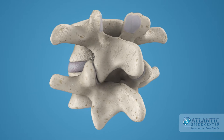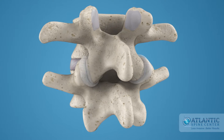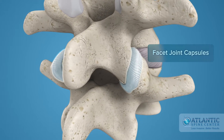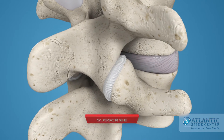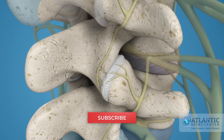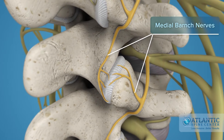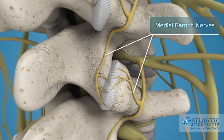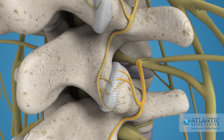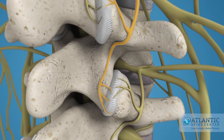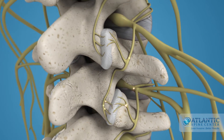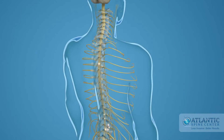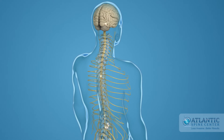Like other joints in the body, each facet joint is surrounded by a capsule of connective tissue. The fibrous capsule has small nerves called the medial branch nerves. Each capsule has two medial branch nerves: the nerve of that level and the nerve from the level above. They carry information about the capsule condition to the spinal cord and then to the brain.